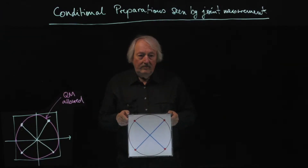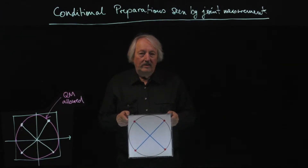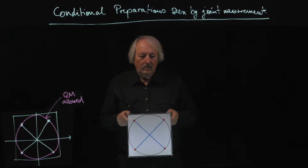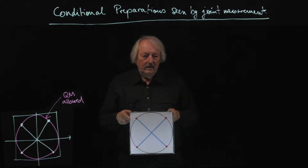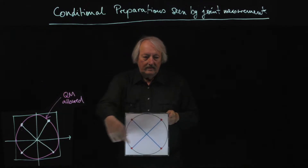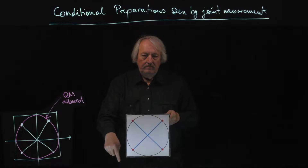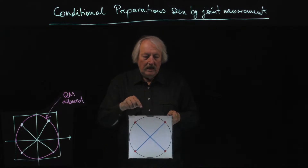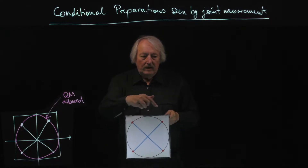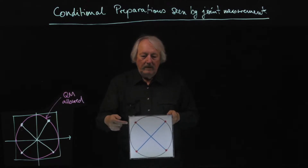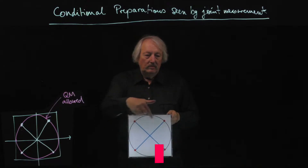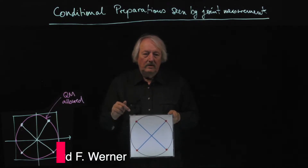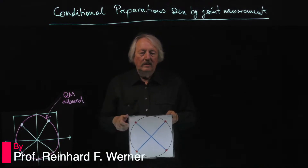Here is a version of the diagram shown previously. We have two axes for two measurements of Bob, and a probability map where the conditional probabilities are marked. These are exactly the data you get in an experiment.